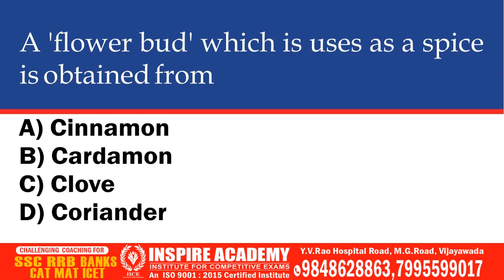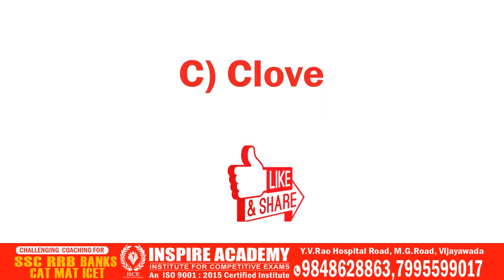A flower bud which is used as a spice is obtained from which plant? Options: Cinnamon, Cardamom, Clove, Coriander. The correct option is Clove.